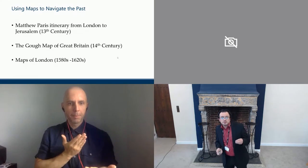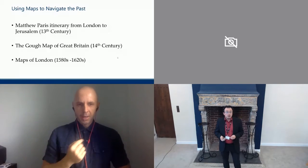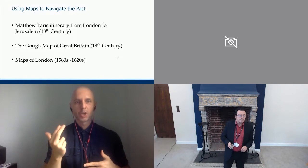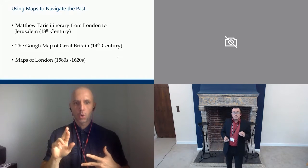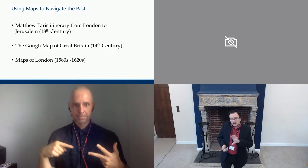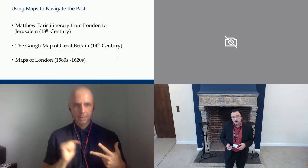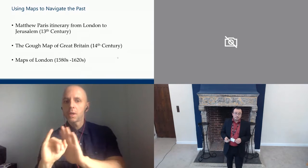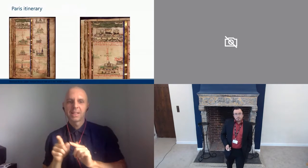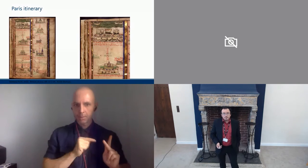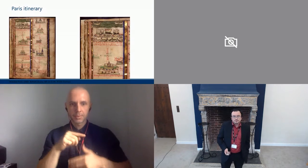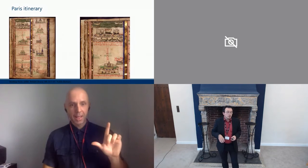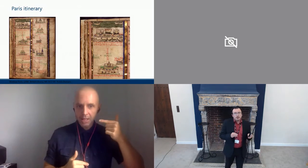We can use other primary sources. I'm going to use three main sources: the Matthew Paris itinerary from London to Jerusalem, made in the 13th century; the Goff map of Great Britain from the 14th century; and a map of London from around the 1580s — to see if we can get past what life was like for the very wealthy, look at what life might have been like for the very religious, and then for the very ordinary. So this is the Paris itinerary. It's a map, but one that probably doesn't look like any map you've encountered before.